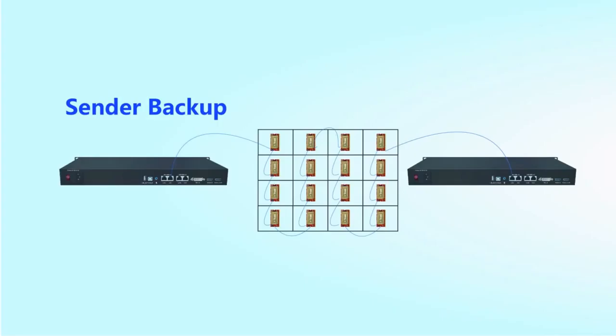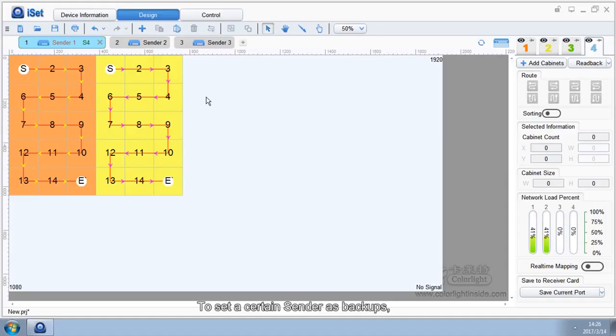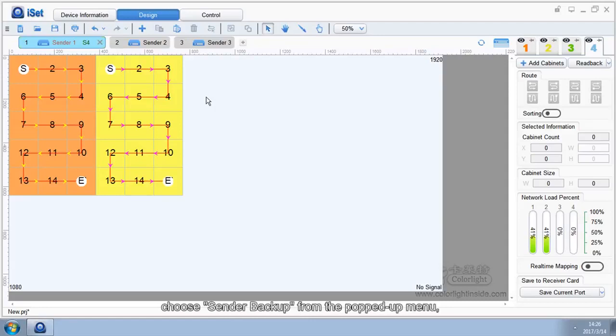Redundant Backup - Sender Backup. To set a certain sender as backup, under the Design page, right-click on the Sender icon. Choose Sender Backup from the popped-up menu, then choose the sender that needs backups.